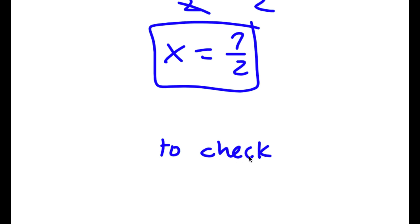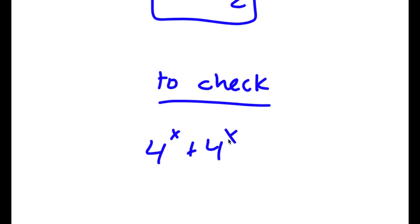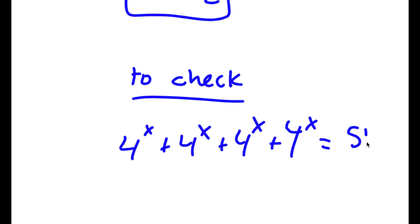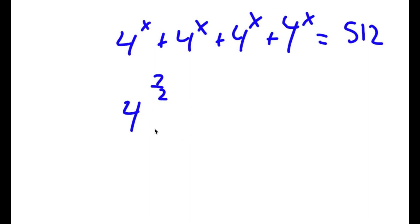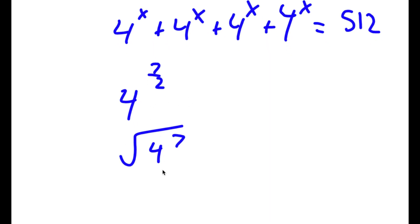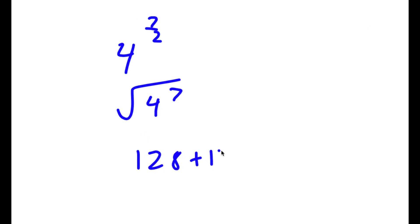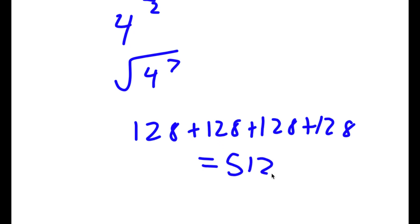To check: 4 to the power of x plus 4 to the power of x plus 4 to the power of x plus 4 to the power of x is equal to 512. So 4 to the power of 7 over 2 is the square root of 4 to the power of 7. Plugging this into a calculator, the square root of 4 to the power of 7 is 128. So I have 128 plus 128 plus 128 plus 128, which is equal to 512. So this is correct.